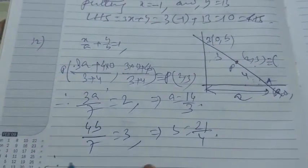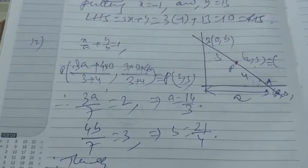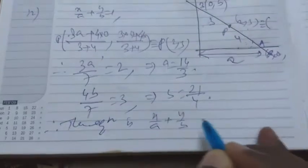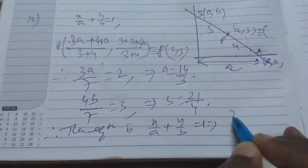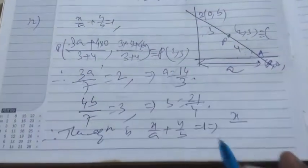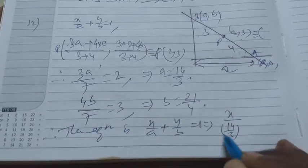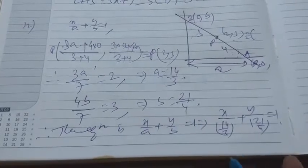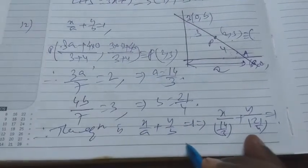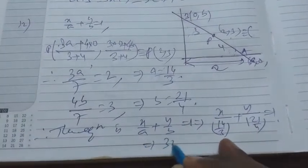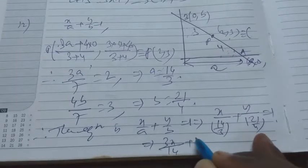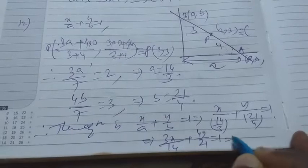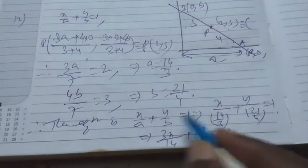Therefore the equation is x/a + y/b = 1. Substituting a = 14/3 and b = 21/4: x/(14/3) + y/(21/4) = 1, which simplifies to 3x/14 + 4y/21 = 1. This is the required straight line.